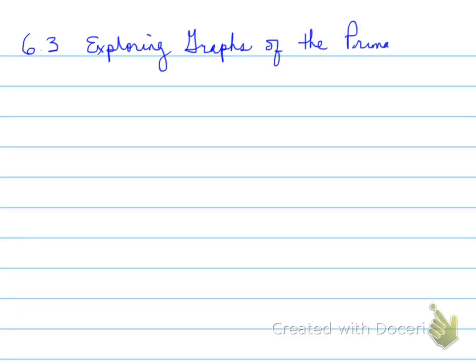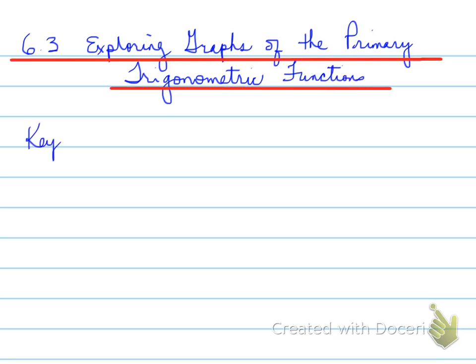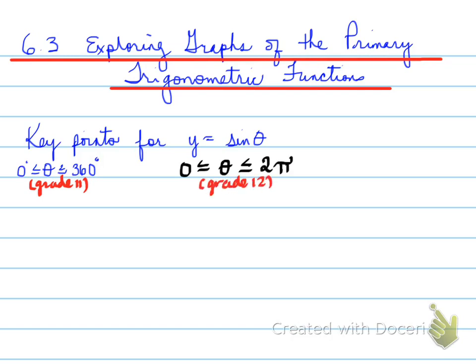6.3, exploring graphs of the primary trigonometric functions. We're going to recap from grade 11 the key points for the sine theta graph. In grade 11, we dealt with angles from 0 to 360 degrees. In grade 12, we deal with theta between 0 and 2π.